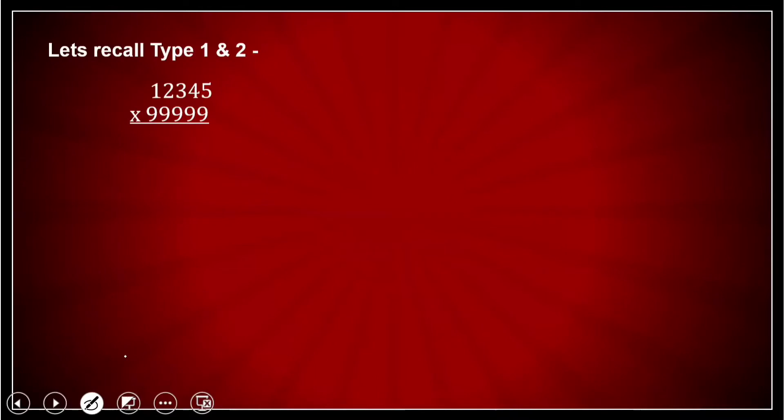In this, if you count here, how many number digits are here? Here the number of digits are coming out to be how much? They are coming out to be 5. And what about this one? The number of 9s is coming out to be how much? It is also coming out to be 5. That means that method can be used.